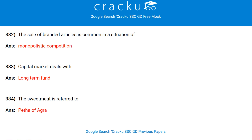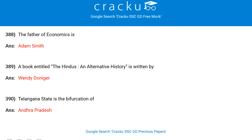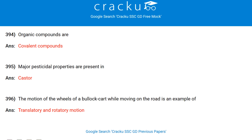The sale of branded articles is common in a situation of monopolistic competition. Capital market deals with long-term funds. The sweet meat referred to as Petha is of Agra. Jawahar Rojgar Yojana was introduced in the Seventh Five Year Plan. The first nuclear explosion in India was conducted at Pokhran. Which country awards the Nobel Prize? Sweden. The father of economics is Adam Smith. The book 'The Hindus: An Alternative History' is written by Wendy Doniger.